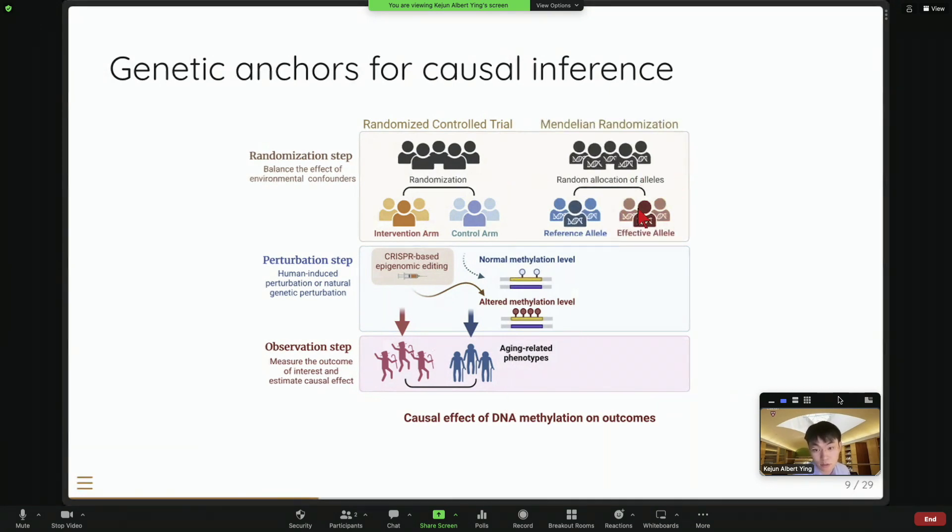It uses a very similar principle. So instead of manually introduced intervention, we use genetic variants that appear near the CpG sites that has the effect on the methylation level, we use them as an instrument. And by comparing people carrying different kinds of genetic variants, promoting or deregulating the DNA methylation level at certain sites, we can also assess the causal effect of DNA methylation on our outcome being tested.